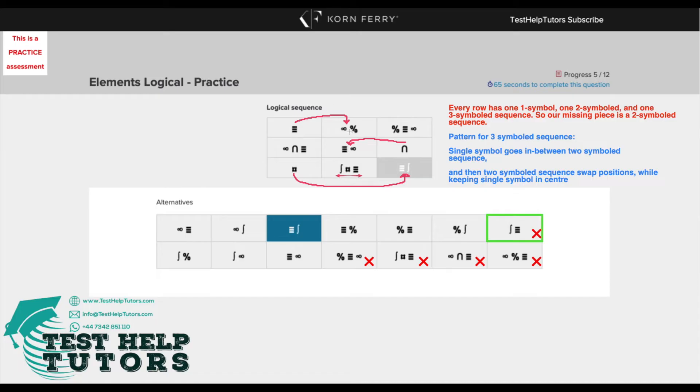What happened was the three lines went in between the infinity symbol and the percentage symbol. So the three lines went in between these two, and then what happened on the next shape was that these two, the infinity symbol and the percentage symbol, they switched positions. So right now we can see that the infinity symbol is on the left and the percentage symbol is on the right. What happened was the infinity symbol went from the left to the right here, and the percentage symbol went from the right to the left here, while maintaining the three lines in the middle.